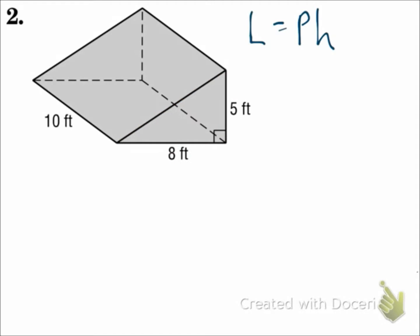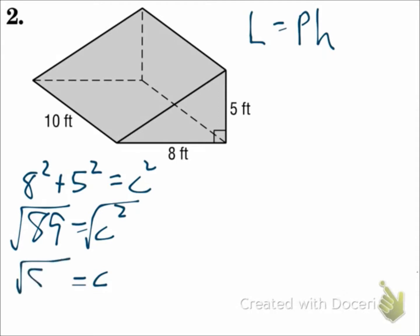We know two sides of the triangle. It is a right triangle, so I can do the Pythagorean theorem to find the third side. 8 squared plus 5 squared equals C squared. So 89 equals C squared. And when you square root both sides, C is the square root of 89.